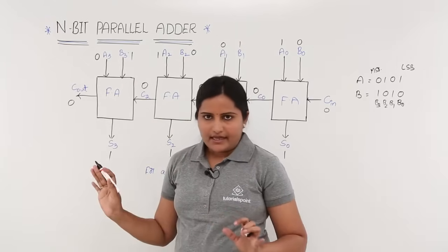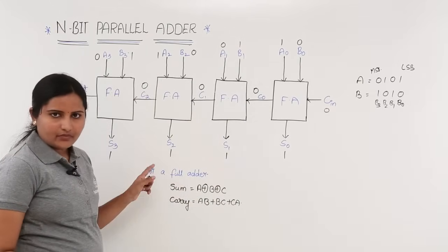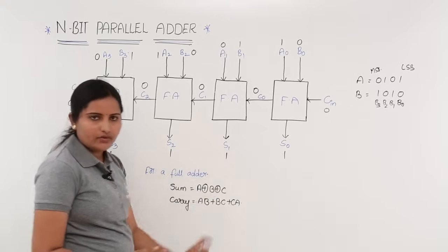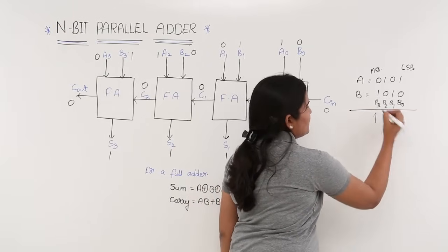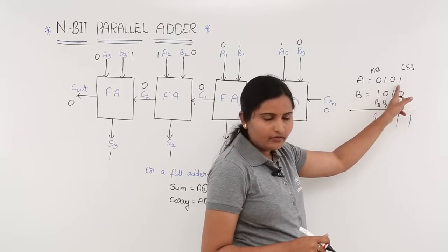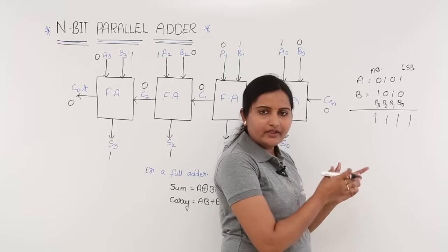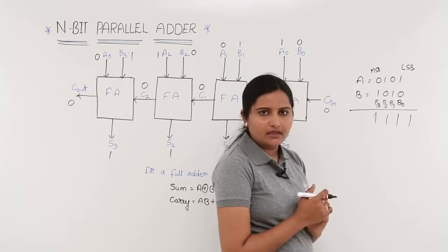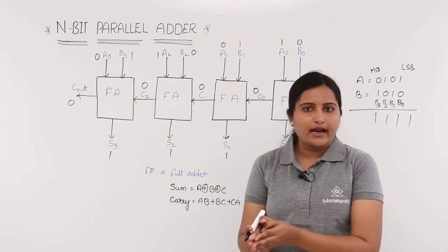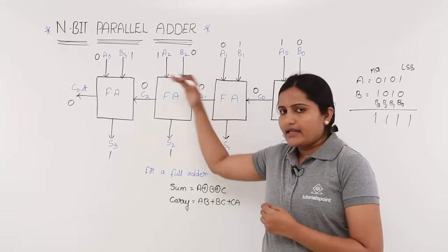There is no final carry. The result is S3 S2 S1 S0 = 1111, which is equivalent to 15. Here A = 0101, which is 5, and B = 1010, which is 10. Adding 5 and 10 gives 15. In this way you can get your answer by using an n-bit parallel adder by cascading n full adders with n carries.